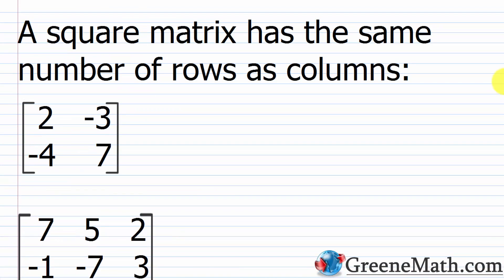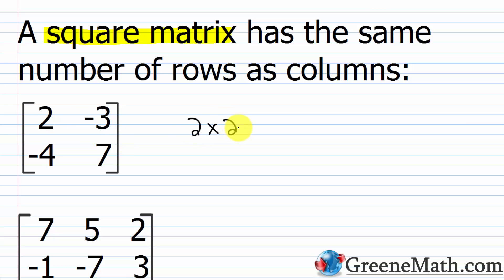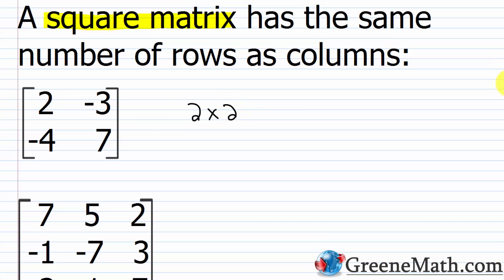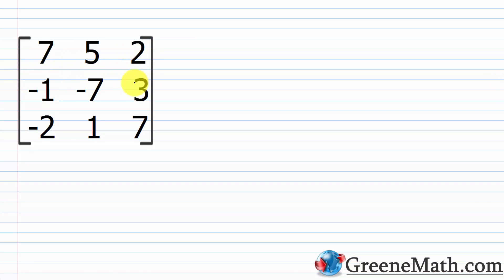A square matrix has the same number of rows as columns. For instance, two rows and two columns gives a two by two matrix. As another example, three rows and three columns gives a three by three. You can have four by four or 27 by 27 — as complex as you want to make it.